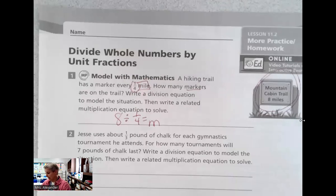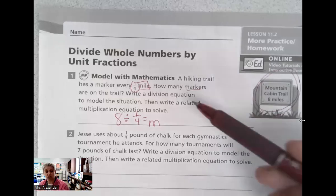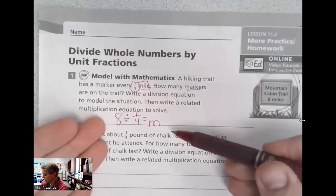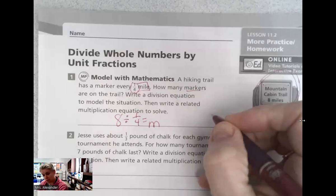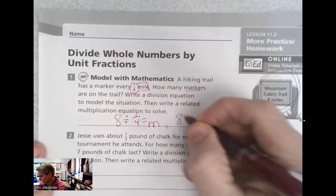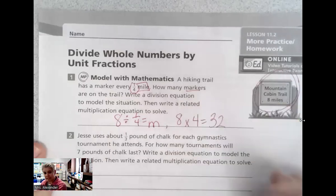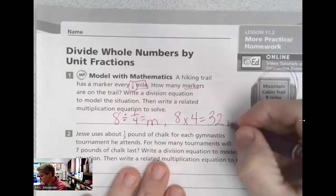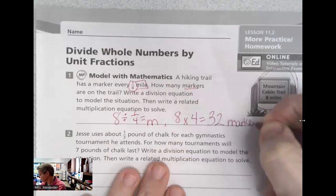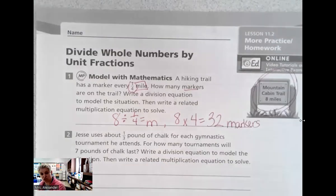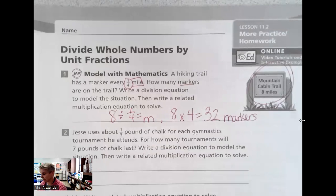So it's not asking us to draw a model, is it? Write a division equation to model the situation. So this is our model. Then we're going to write the related multiplication. So we have keep, change, flip, and we can solve and we would know it's 32 markers on this trail. All right. Just that straightforward for us today.